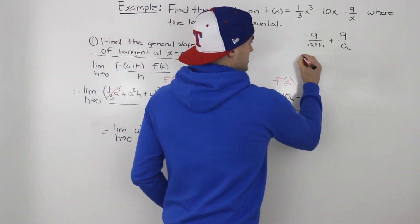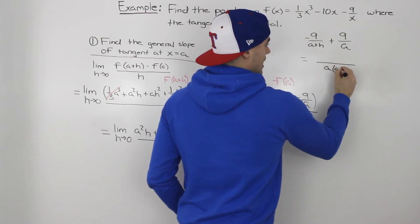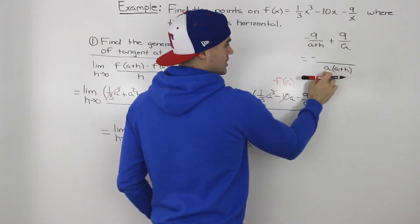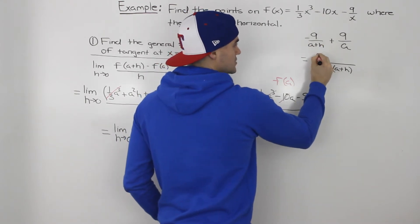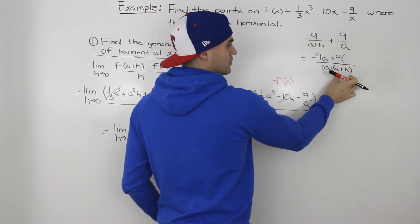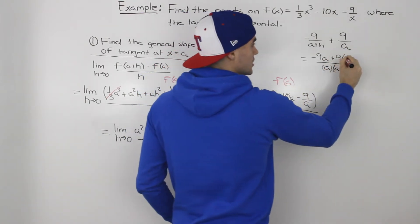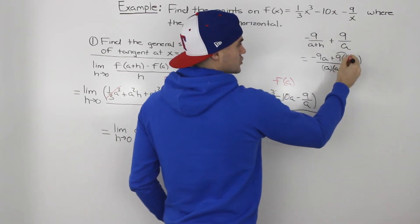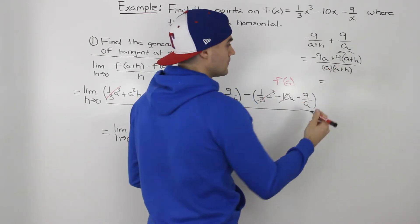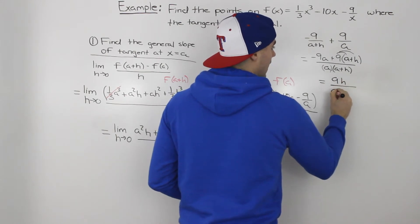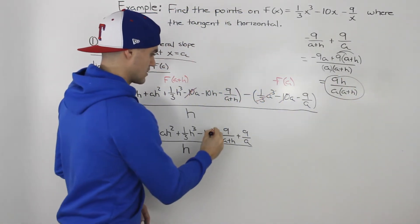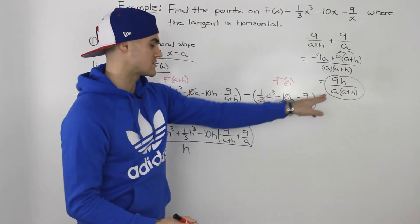Taking minus 9 over (a+h) plus 9 over a, the common denominator is a(a+h). Multiplying through, the numerator becomes negative 9a plus 9(a+h). Distributing the 9, the negative 9a and positive 9a cancel out, leaving us with 9h all over a(a+h). So those two fraction terms combine into 9h over a(a+h).